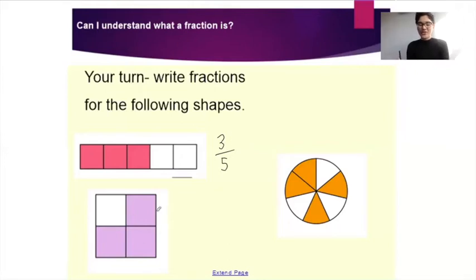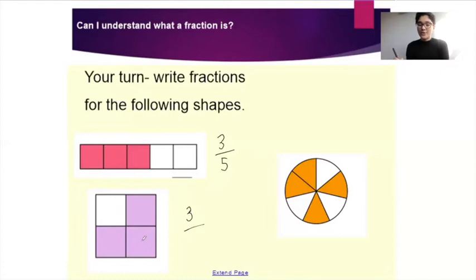The next shape, I'm going to see how many have been shaded — one, two, three. And then how many do I have in total? One, two, three, four. So my fraction would be three out of four.